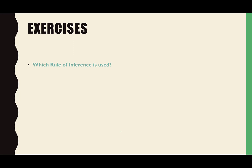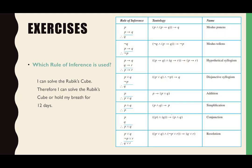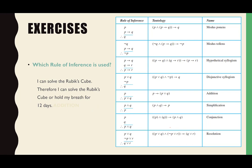Let's play a game: which rule of inference is used? 'I can solve the Rubik's Cube, therefore I can solve the Rubik's Cube or hold my breath for 12 days.' Is that a true statement? It is. Which rule of inference is that? Addition. Let P be 'I can solve the Rubik's Cube' and Q be whatever — P therefore P or Q.